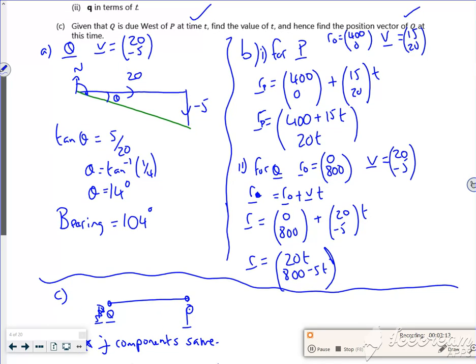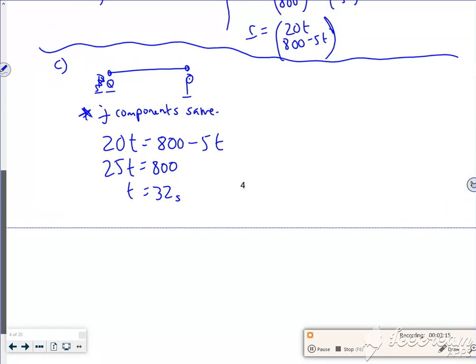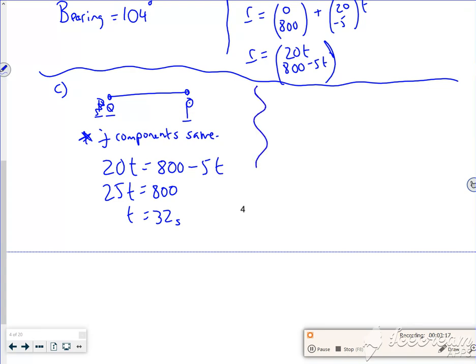So the position of Q, that's R, is 20 times 32 and 800 minus 5 times 32.